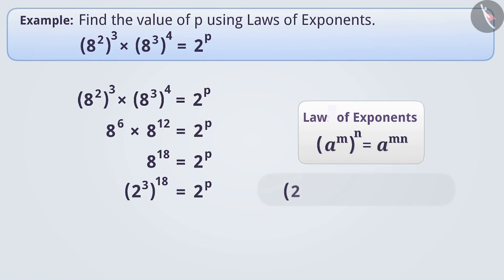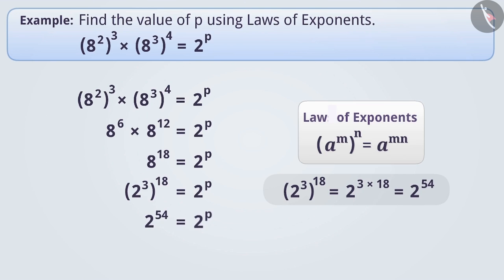Using this, we get 2 to the power of 3 to the power of 18, which equals 2 to the power of 3 × 18, which equals 2 to the power of 54. Now if we compare the left side and the right side, it becomes easy to tell that the value of p is 54.